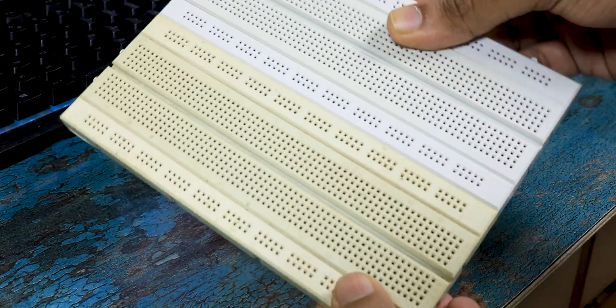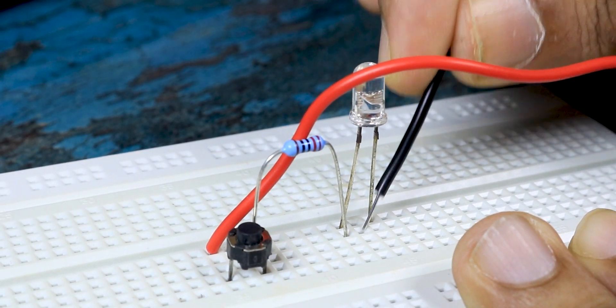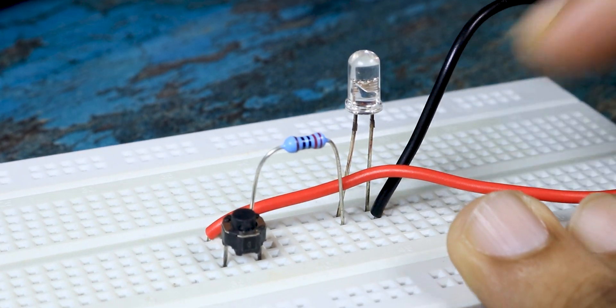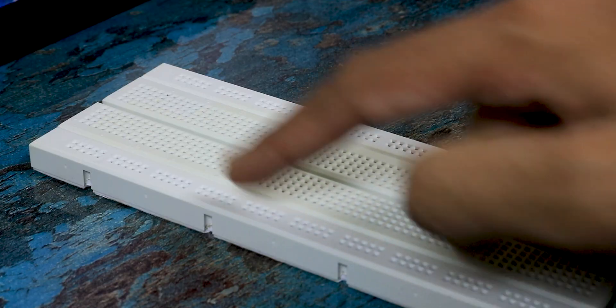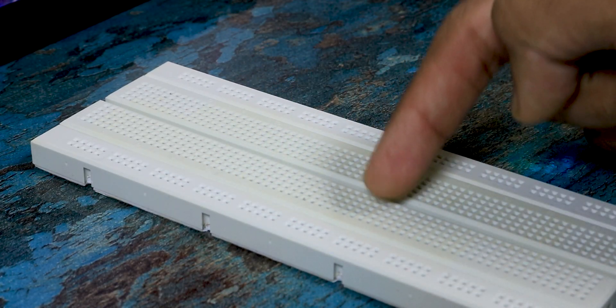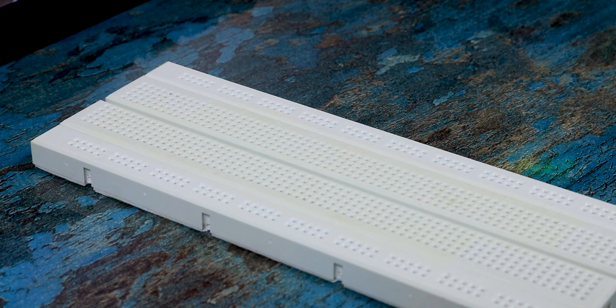Now coming to the point, how do you use one? Well, before using one you need to understand how it is connected internally. Pretty much all breadboards have two parts: power line and prototyping space.